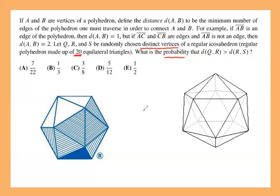We have 20 triangular faces. You can count them: 10 on this side, 10 on the other, giving 20 faces. Each face has three sides because they're equilateral triangles, so that's 3 × 20 = 60 edges. But each edge is shared by two triangles, so every edge gets counted twice. Therefore the number of edges is 20 × 3 ÷ 2 = 30.